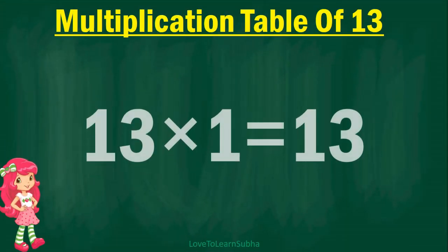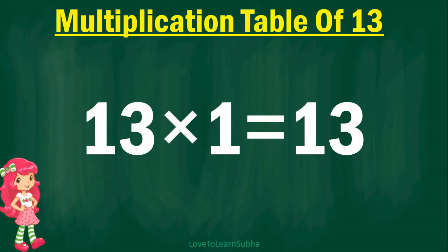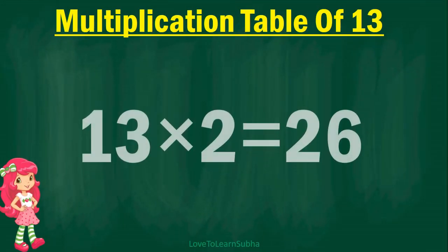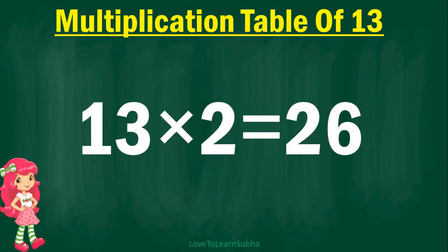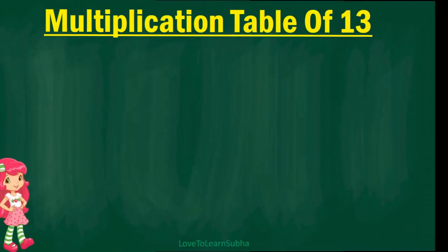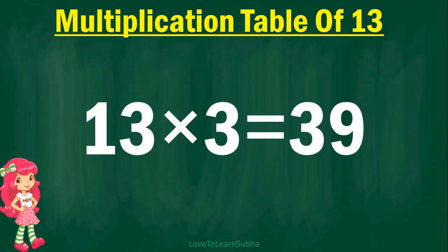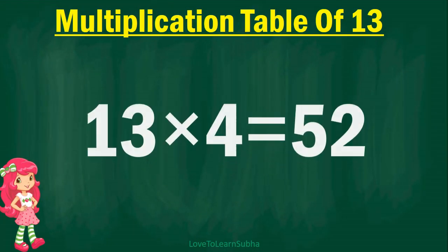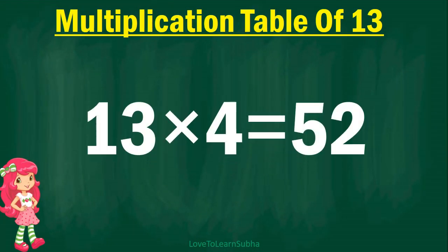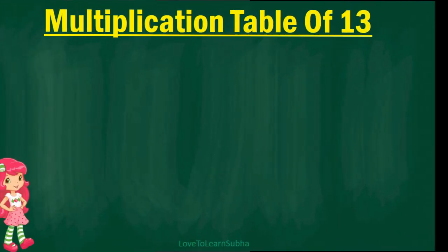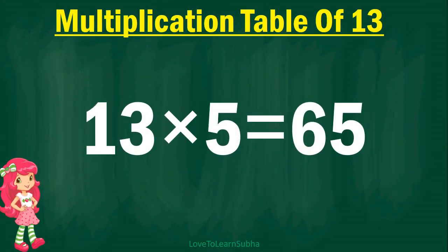13 ones are 13, 13 twos are 26, 13 threes are 39, 13 fours are 52, 13 fives are 65,